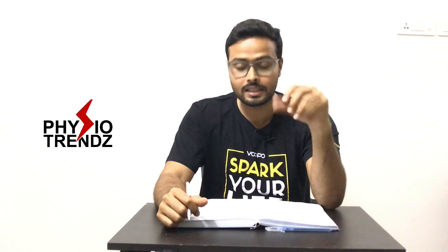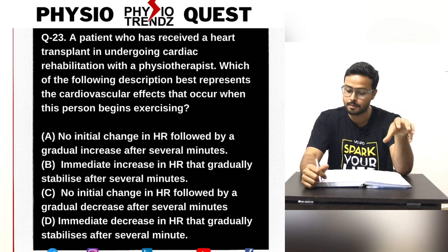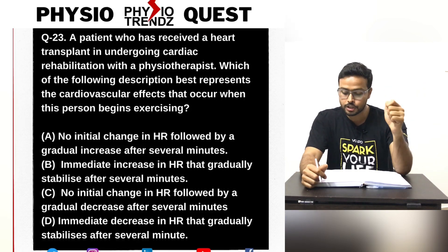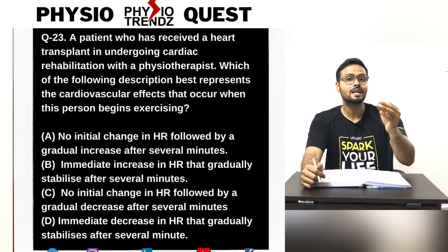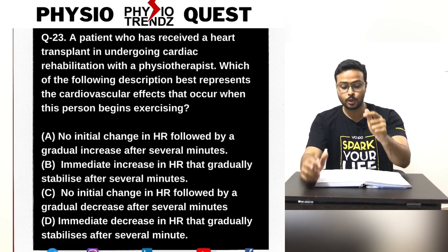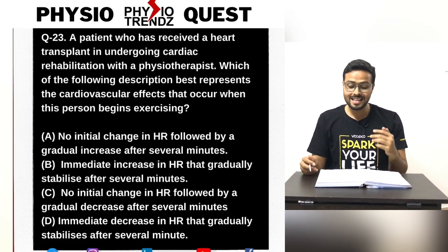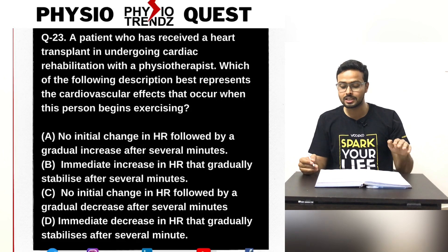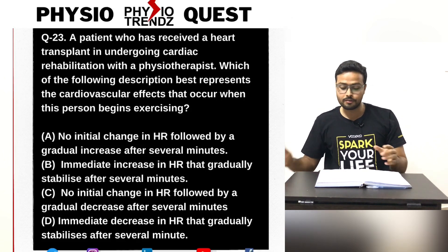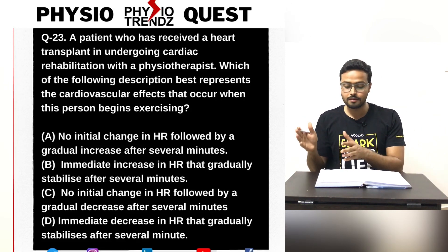Moving on to question number 23, which was more cardiorespiratory-related. The question says: a patient who has received a heart transplant is undergoing cardiac rehabilitation with a physical therapist. Which of the following best represents the cardiovascular effects when this person begins to exercise? Option A: no initial change in heart rate followed by a gradual increase after several minutes. Option B: immediate increase in heart rate that gradually stabilizes. Option C: no initial change in heart rate followed by a gradual decrease. Option D: immediate decrease in heart rate that gradually stabilizes.